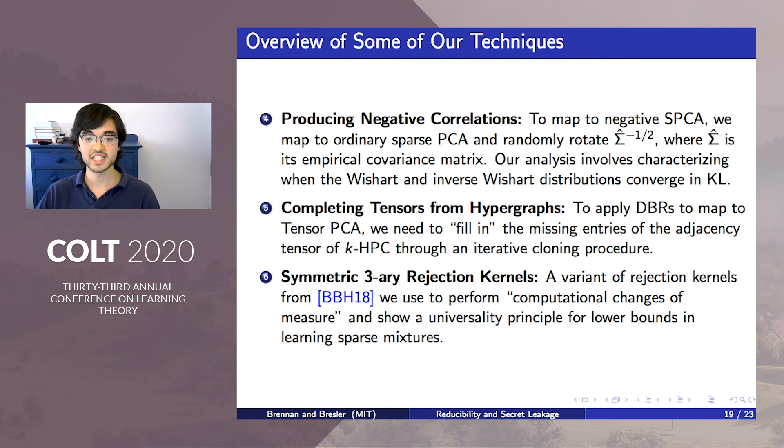Finally, we also introduce an extension of the rejection kernel framework from a previous COLT paper to perform computational changes of measure and show that our lower bounds for learning sparse mixtures hold more generally over a universality class.